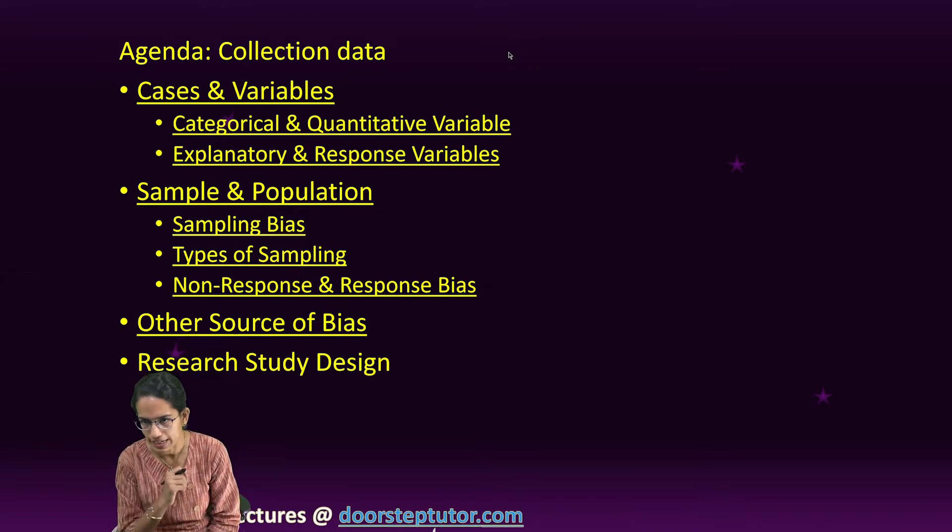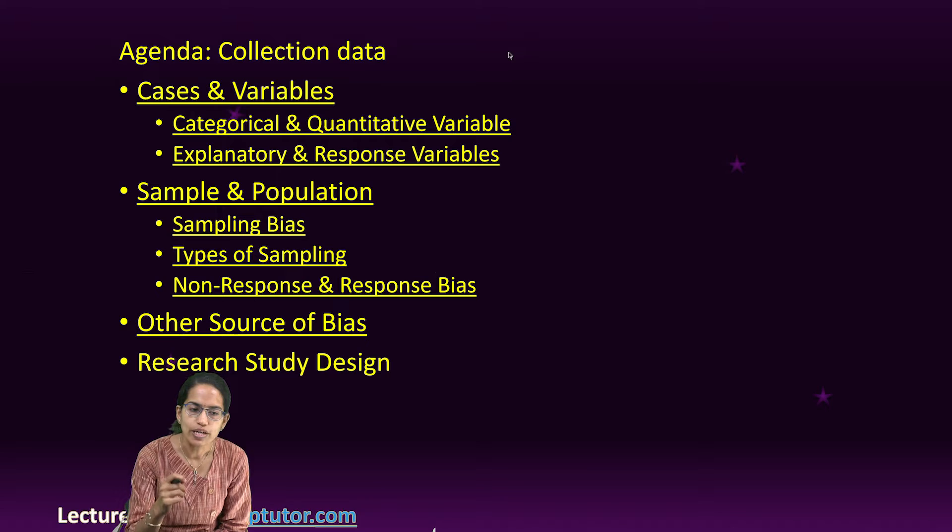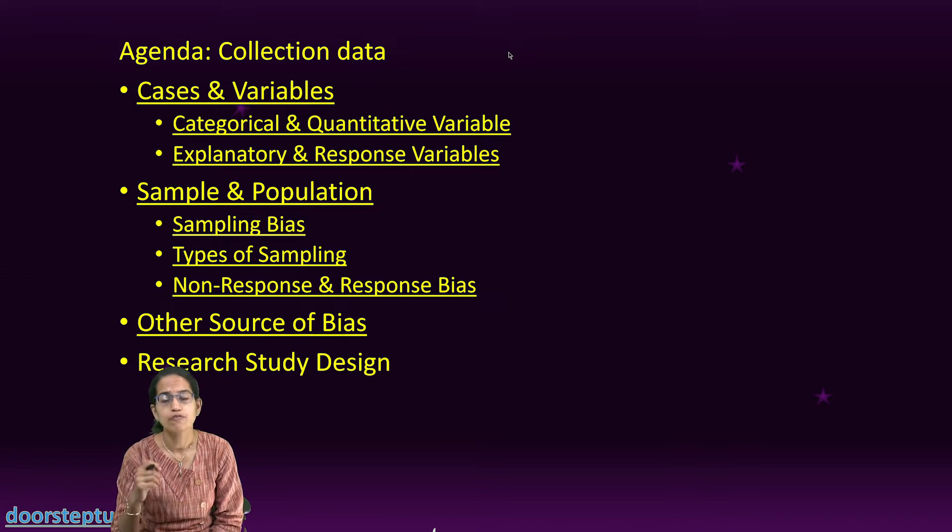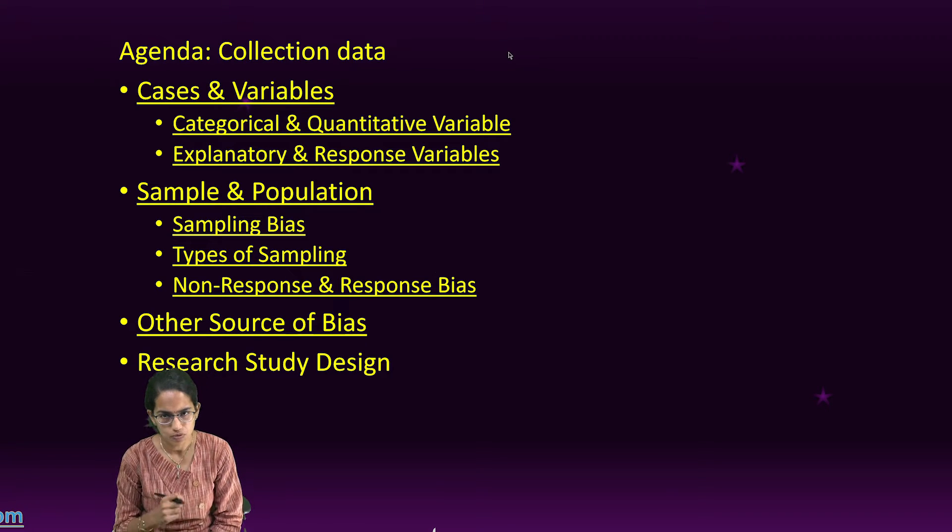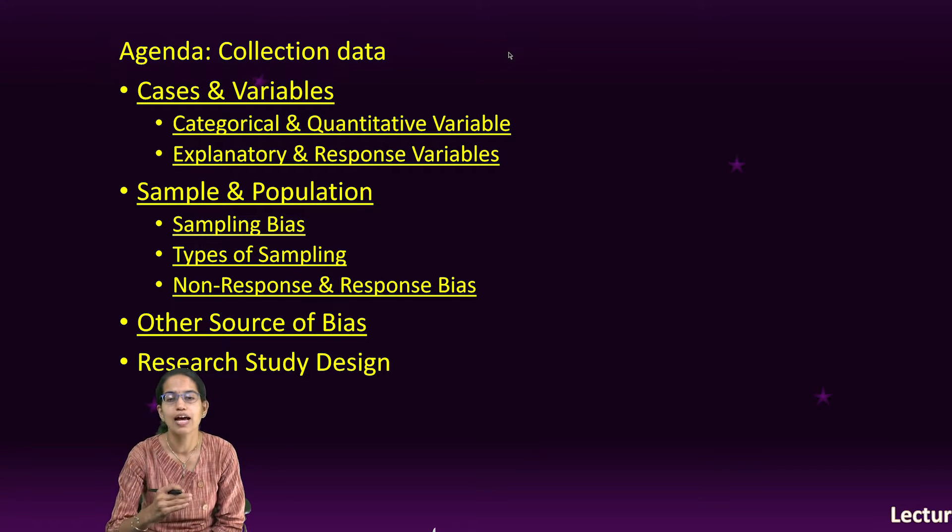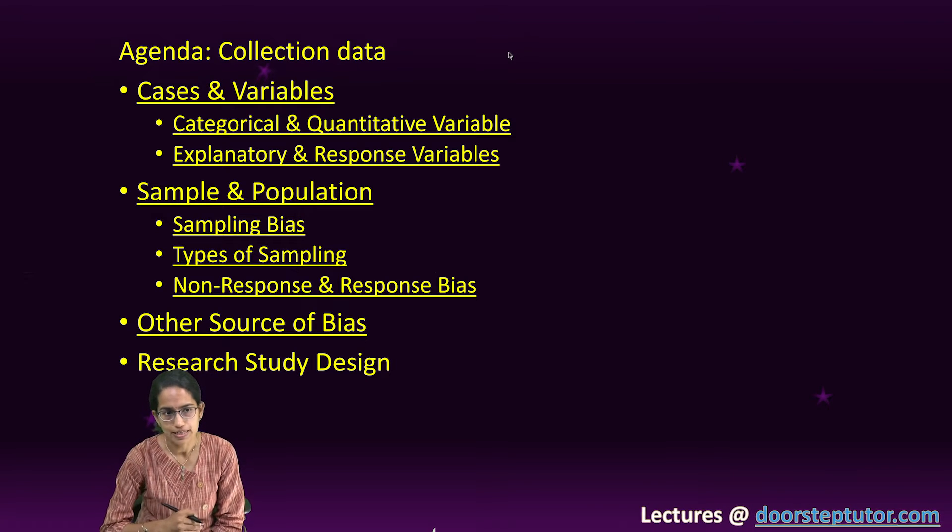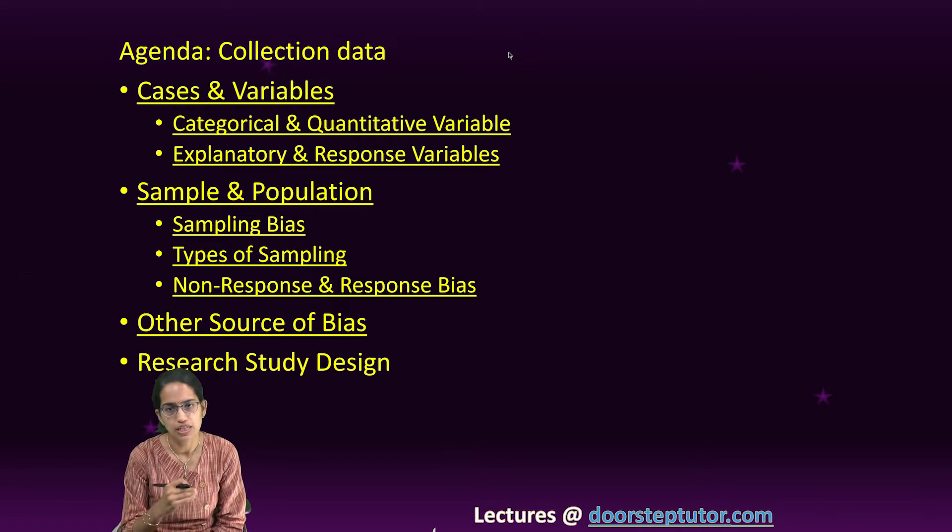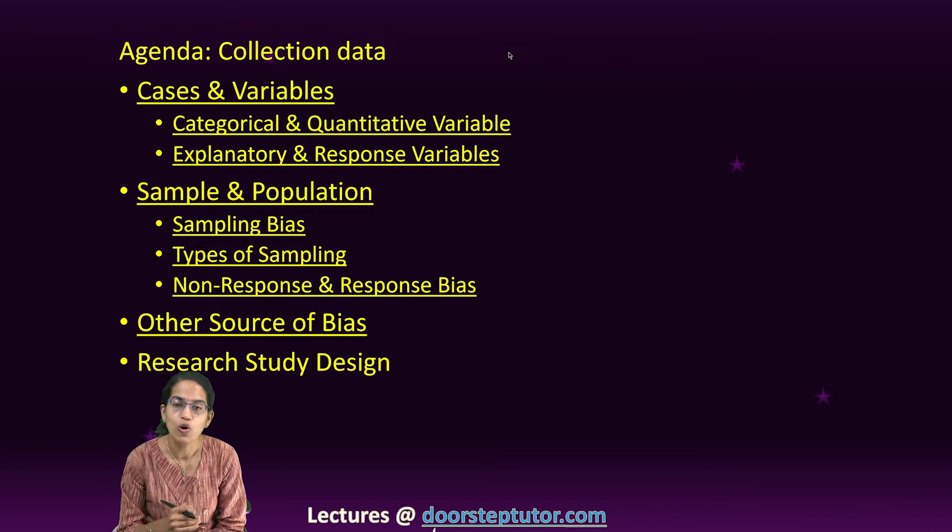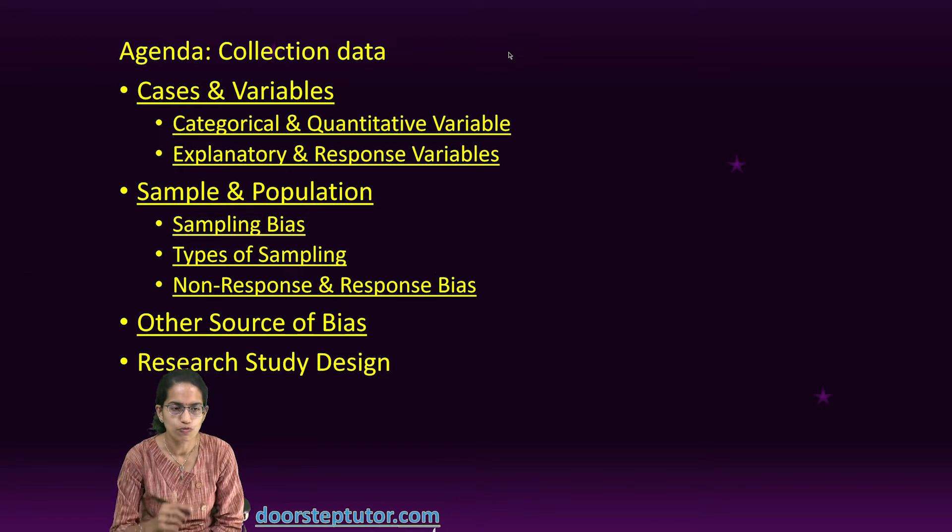When talking about collection of data, there are four important elements we would understand in this lecture: cases and variables, sample and population, and biasness. However, in the next coming lecture, another subset of collection of data, we would focus on research study design.